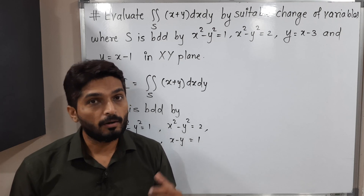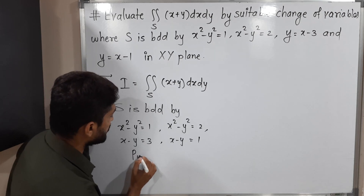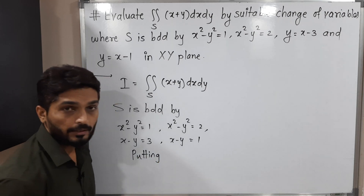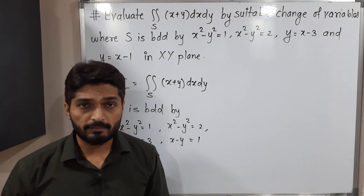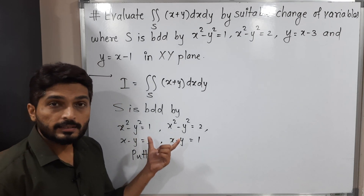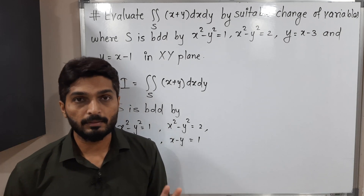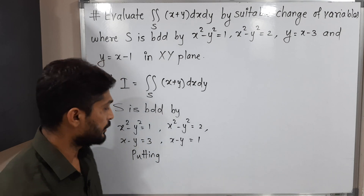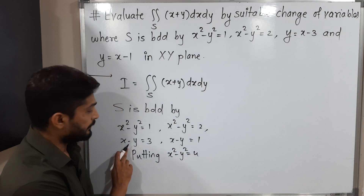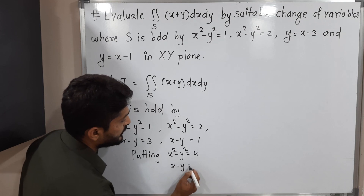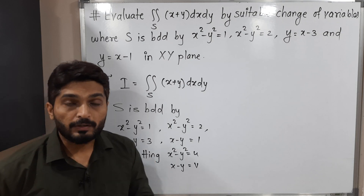We need a substitution to simplify the problem. Observing the pattern: the first two equations share x² - y² on the left-hand side, so we put u = x² - y². In the last two equations, x - y repeats, so we put v = x - y. These are our substitutions.